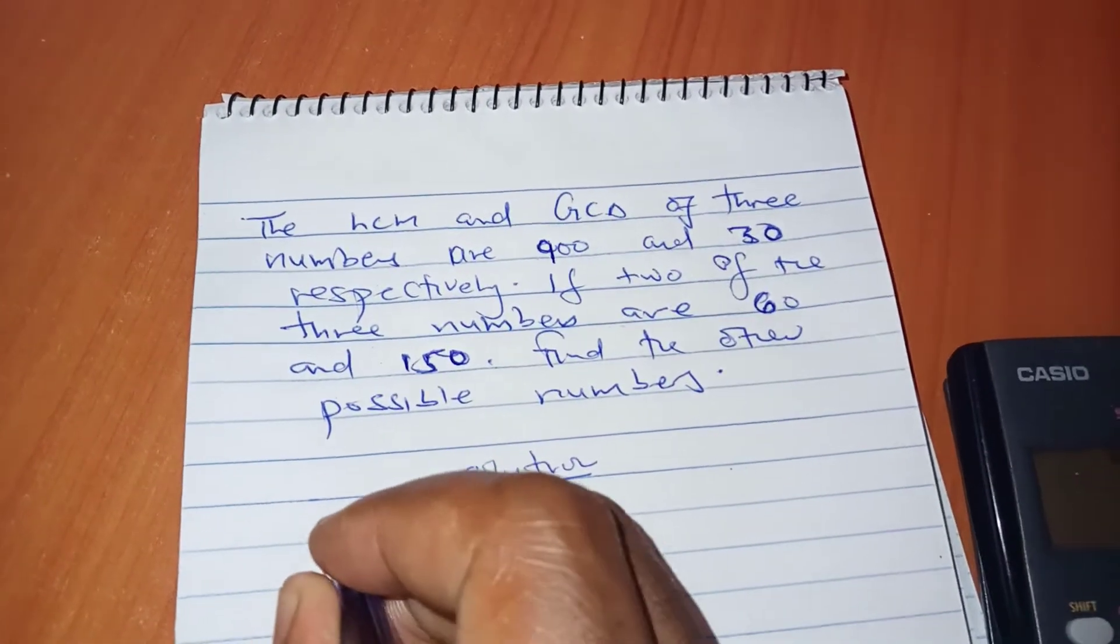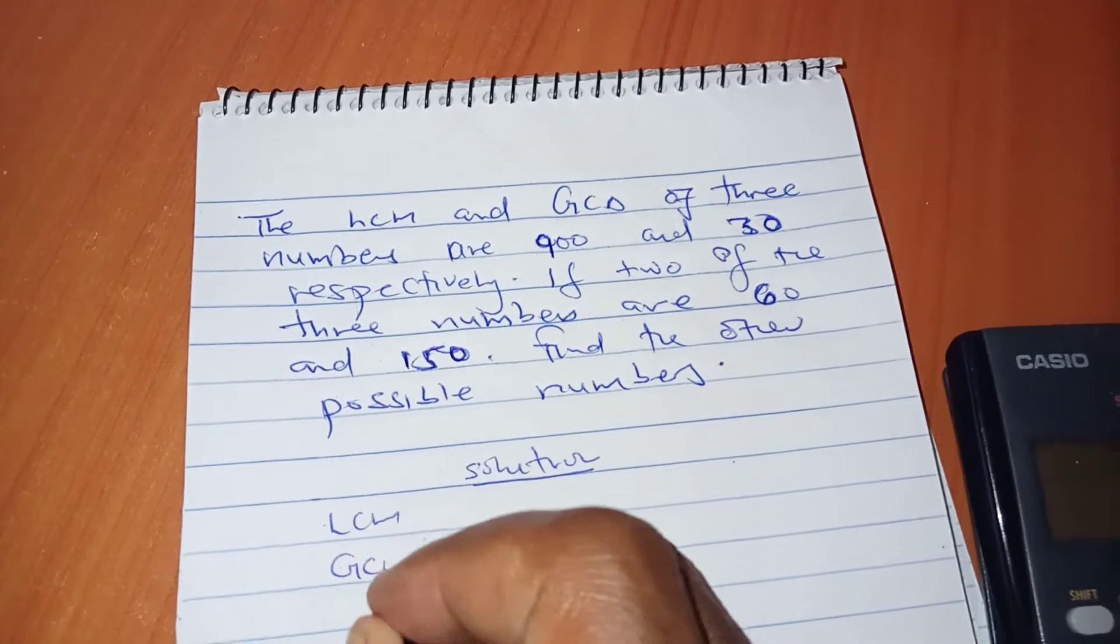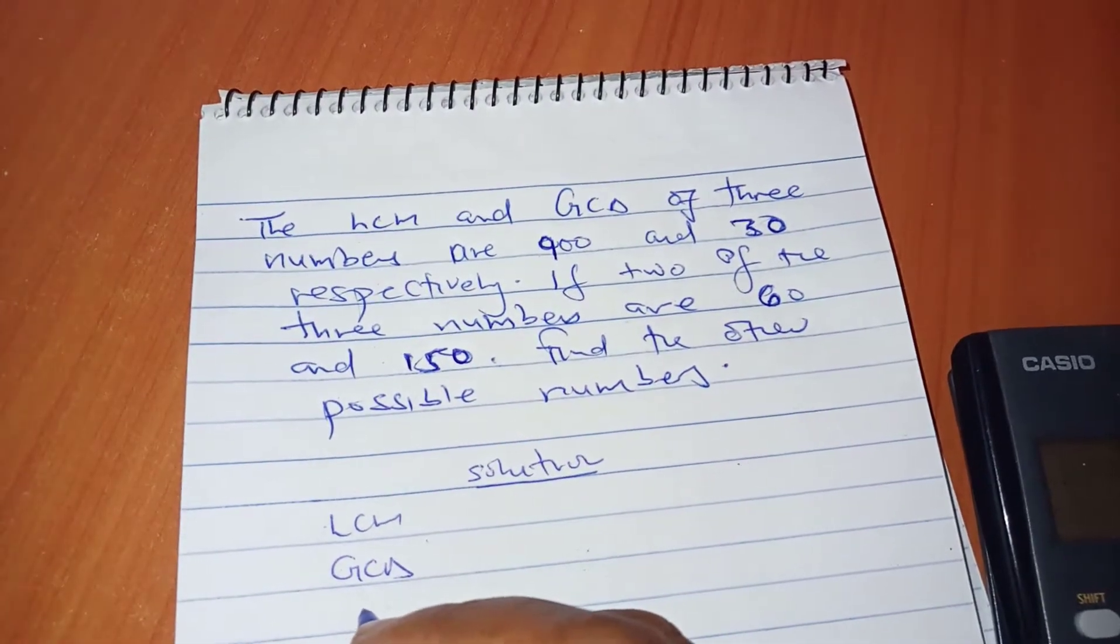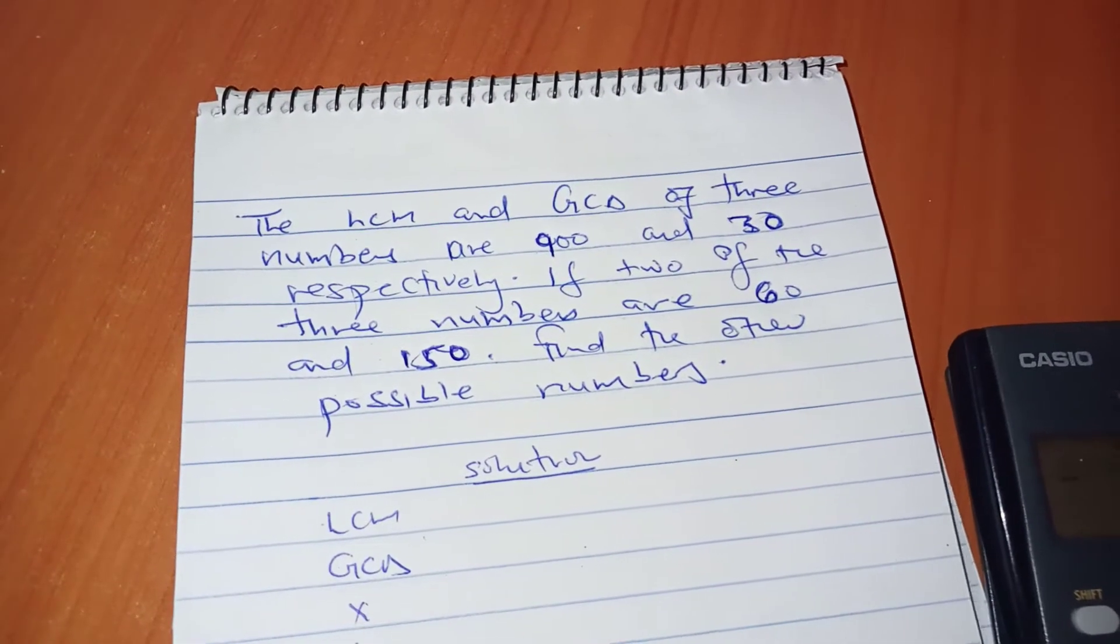I want us to write the numbers: LCM, GCD, and the other numbers, which I'll designate as X, Y, W, Z.